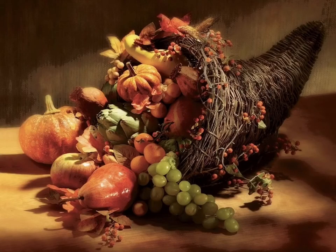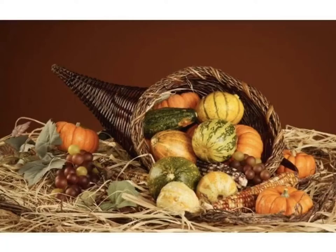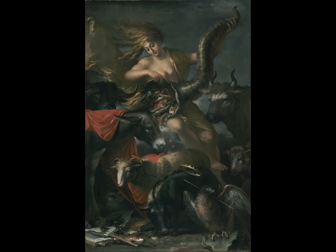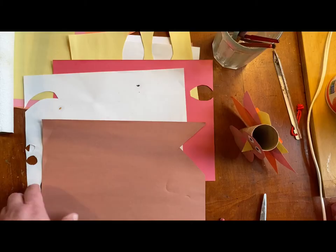A horn of plenty is this woven basket in the shape of a horn. It's meant to hold fruits, vegetables, or nuts. It's meant to show that you have a lot and that you have a lot to be thankful for.